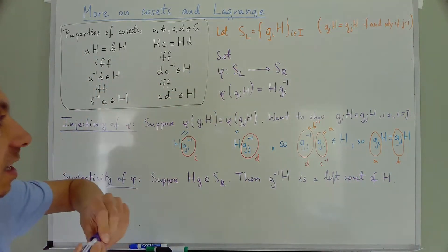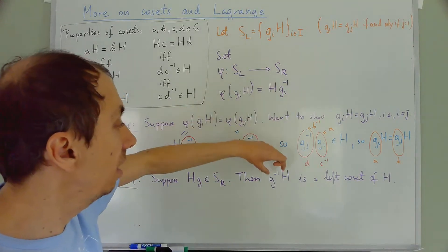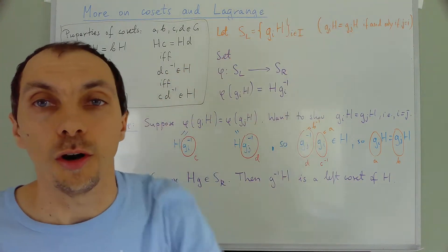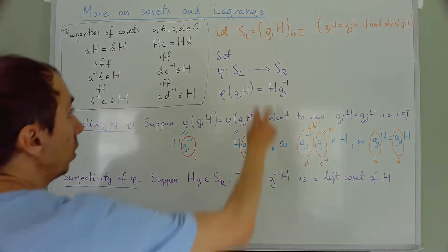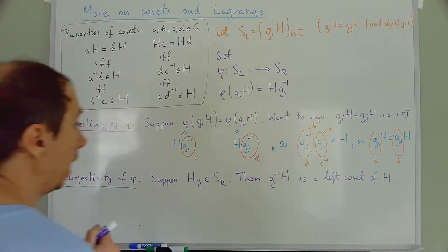But inside SL, these guys here, so it lies inside SL. So these guys here are all the distinct cosets. So that means this one must be equal to one of the Gi Hs.